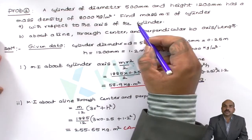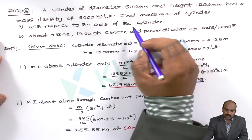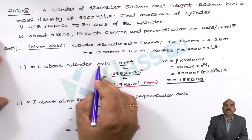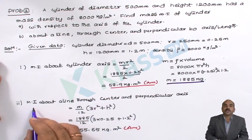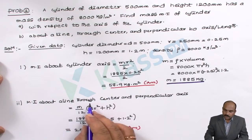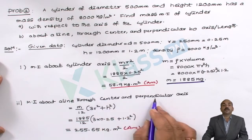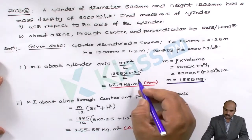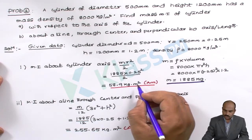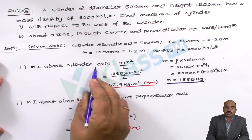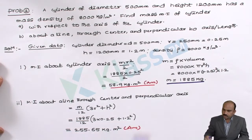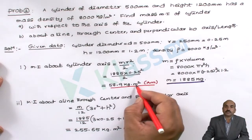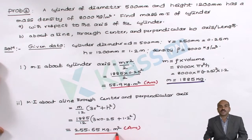To revise: for this cylinder problem, the moment of inertia about the cylinder axis uses the formula MR²/2, and the moment of inertia about a line through the centre perpendicular to the axis uses M/12 × (3R² + H²). The mass moment of inertia about the cylinder axis is 58.9 kg·m², and about the perpendicular axis is 255.65 kg·m². This completes the problem.